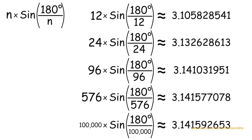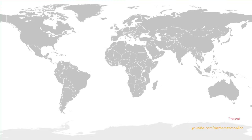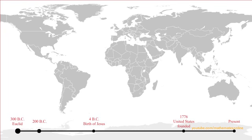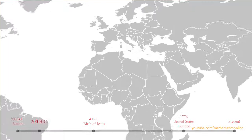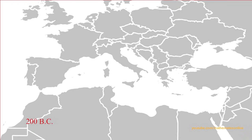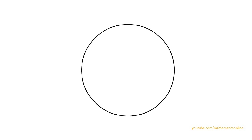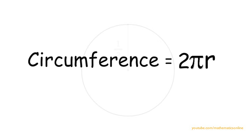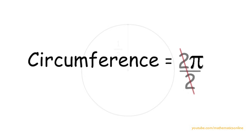So why does this equation work? Around 200 BC, Archimedes devised a method for calculating pi by the method of exhaustion. First we create a circle with a radius of one half. The circumference of a circle is equal to 2πr, so with a radius of one half, the circumference is equal to pi.